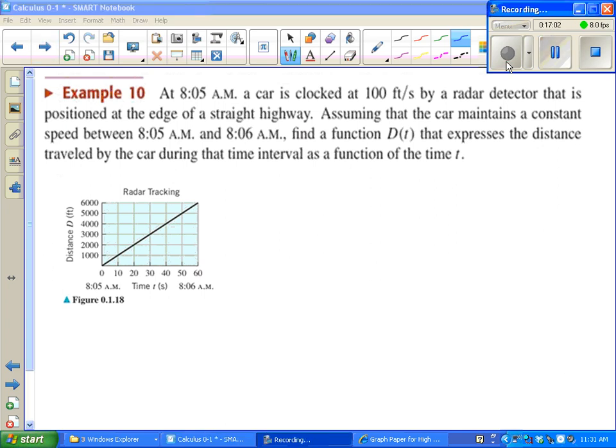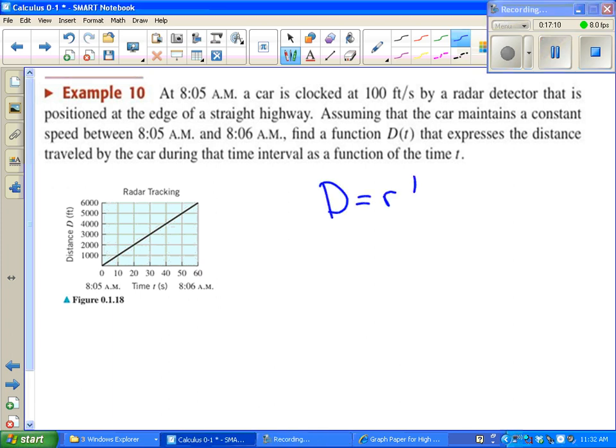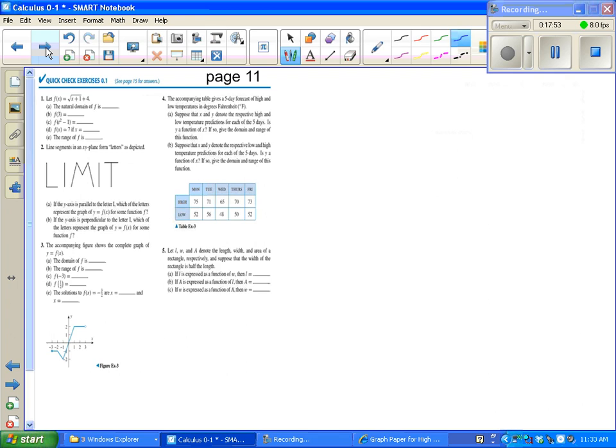I recommend you pause the video, read over this problem, and then we will talk about it. Hopefully you looked at this and thought of the equation distance equals rate times time. We're given the rate, we're going 100 feet per second. So all we need is time and we can find out distance traveled. This whole thing happens over a one minute period. Except we're not talking about minutes, we're talking about seconds. So our t is in seconds. Since we're only looking at that one minute period, we start at zero seconds, and then one minute later would be 60 seconds. And we can see that in the graph.